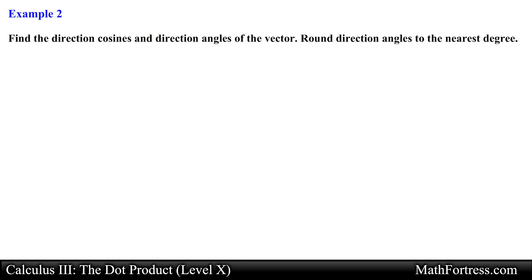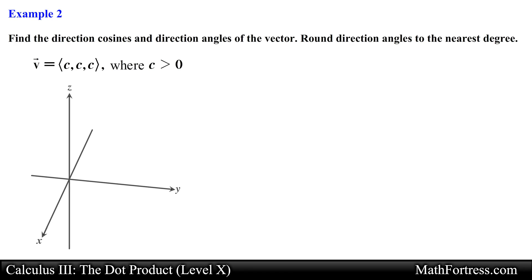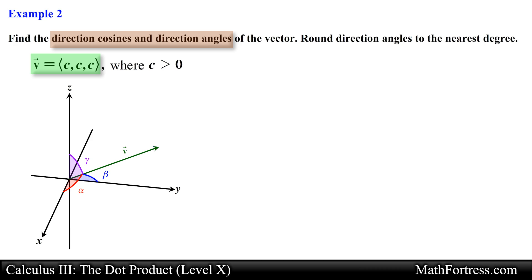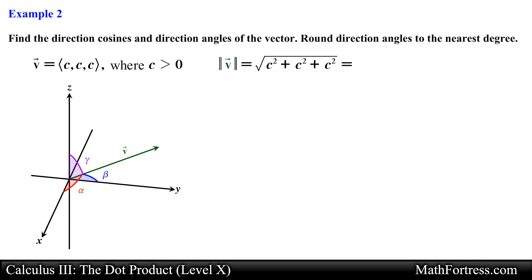Alright, let's try the next example. Find the direction cosines and direction angles of the vector; round direction angles to the nearest degree. Similar to the previous example, we are asked to find the direction cosines and direction angles of vector v, which has equal positive components. Let's start by finding an expression that represents the magnitude of this vector. Finding the sum of the square of the components and taking the square root, we obtain the following expression. Recall that the square root of a quantity squared is by definition equal to the absolute value of the quantity.